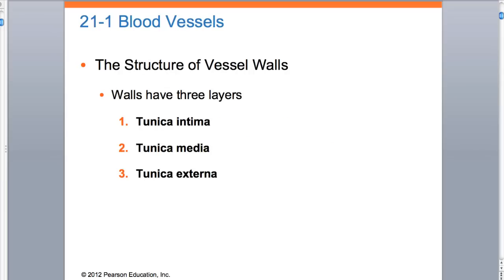This slide mentions the three layers of the blood vessel wall: the tunica intima, the tunica media, and the tunica externa. Although this slide is important because it mentions these three layers, the next few slides give you the properties of these layers. It's nice to know the three layers, but it's also more important to know the properties of them. I'm going to go line by line, slide by slide, explaining that.